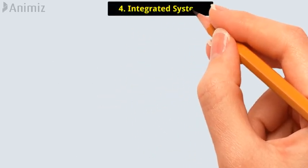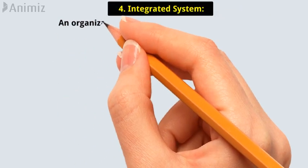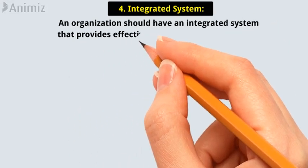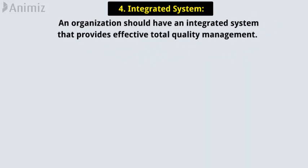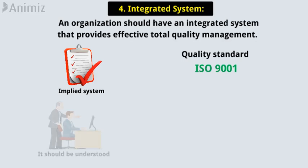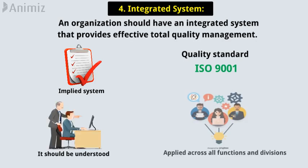Principle 4: Integrated System. An organization should have an integrated system that provides effective total quality management. This may be an implied system, or one based on a quality standard such as ISO 9001, but it should be understood and applied across all functions and divisions of the organization.